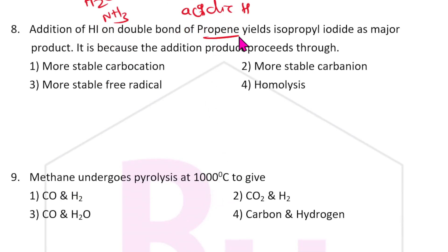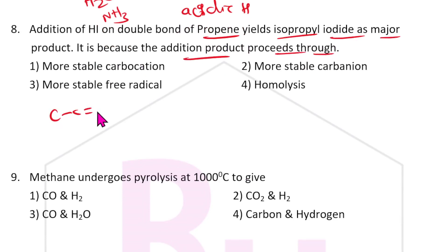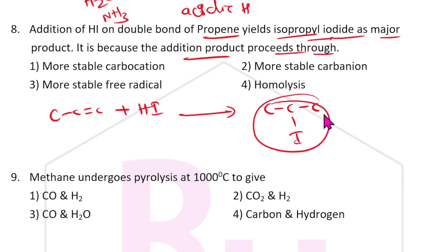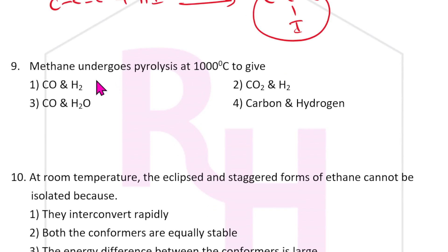HI on propene (double bond) yields isopropyl iodide as a major product. Propene reacts with HI forming C-C-C-I. Isopropyl iodide is the major product because the more stable carbocation forms — Markovnikov's rule — via carbocation intermediate. The answer is first one.